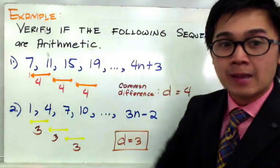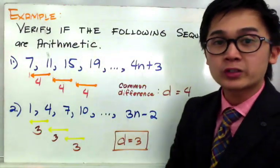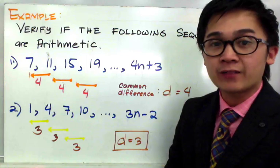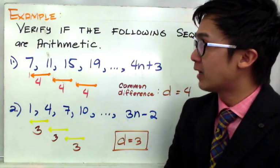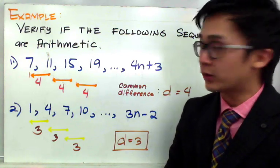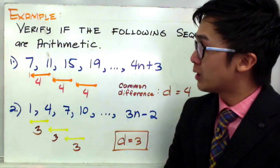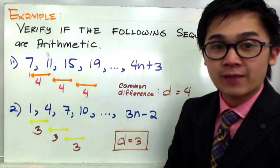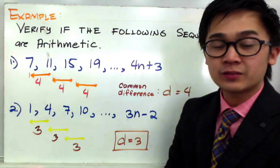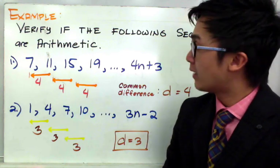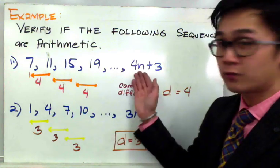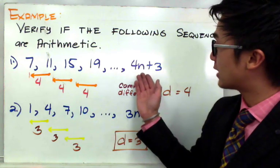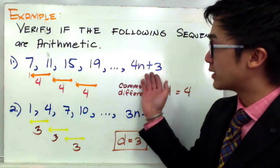For this example, we're going to verify if a given sequence of numbers is considered to be an arithmetic sequence. For number 1, we have 7, 11, 15, 19, and the formula for this sequence is given by 4n plus 3.